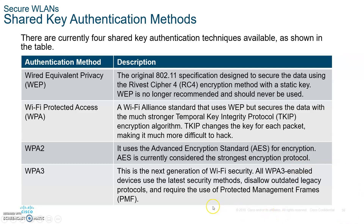WPA, the Wi-Fi Protected Access, uses TKIP as its encryption method. WPA2 uses the Advanced Encryption Standard (AES), which is extremely strong — it takes over 17 trillion years to crack a WPA2 key. It's virtually impossible to crack, making WPA2 a very strong encryption method.